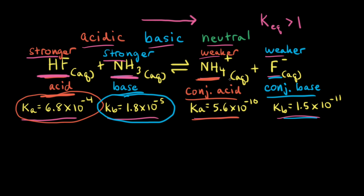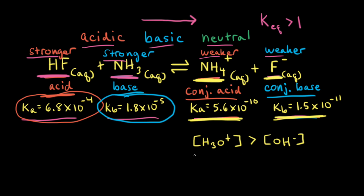At equilibrium, we're going to have more of our products than our reactants. To determine if the solution is acidic, basic, or neutral, we have to think about the ammonium cation and the fluoride anion in aqueous solution. Since the Ka value for the ammonium cation is greater than the Kb value for the fluoride anion, the ammonium cation is better at producing hydronium ions than the fluoride anion is at producing hydroxide anions. So the concentration of hydronium ions will be greater than the concentration of hydroxide anions, and therefore the resulting solution will be acidic.